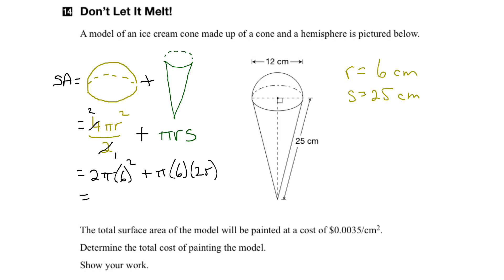So that's 36 times 2 would be 72π, plus 6 times 25 is 150, so 150π.